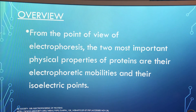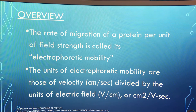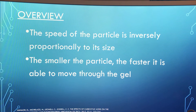From the point of view of electrophoresis, the two most important physical properties of proteins are their electrophoretic mobilities and their isoelectric points. The electrophoretic mobility of a protein depends on its charge, size, and shape, whereas its isoelectric point depends only on its net overall charge. The rate of migration of a protein per unit of field strength is called its electrophoretic mobility, and the units are those of velocity divided by the units of electric field. The particles are attracted to the pole of opposite charge and begin moving toward it. The speed of the particle is inversely proportional to its size — the smaller the particle, the faster it moves through the gel.